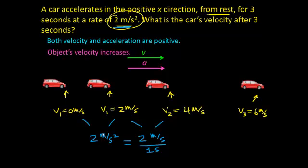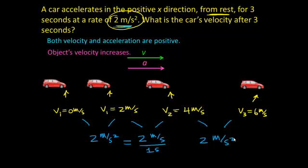We often say, for shorthand, the acceleration is 2 meters per second squared — but what that really means is the velocity increases by 2 meters per second every second. We're only dealing with constant acceleration here. This was an intuitive, non-calculation-based way of finding velocity from acceleration. Now let's figure out how to use the kinematic equation with a very similar problem.